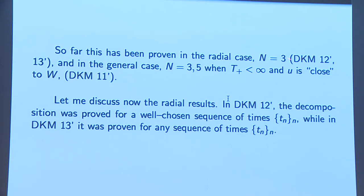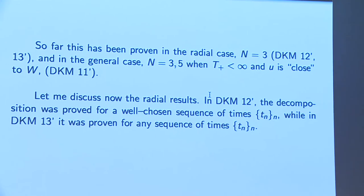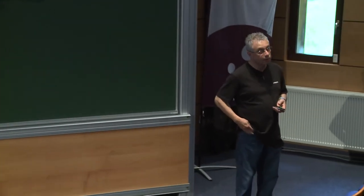In the radial case in three dimensions, this has been proved in work with Duyckaerts and Merle. In dimensions 3 and 5, this has been proved for the finite time case with U close to W, also with Duyckaerts and Merle. In the remaining part of this hour I will give a broad sketch of these results and the later large data results in the non-radial case. The rest of the lectures will try to prove these results, aiming first to reach the radial case, and then the non-radial case in the next part.